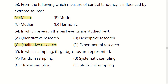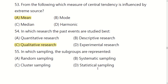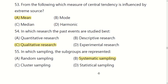In which sampling are the subgroups represented? Options are: random sampling, systematic sampling, cluster sampling, or stratified sampling. The right option is B: systematic sampling.